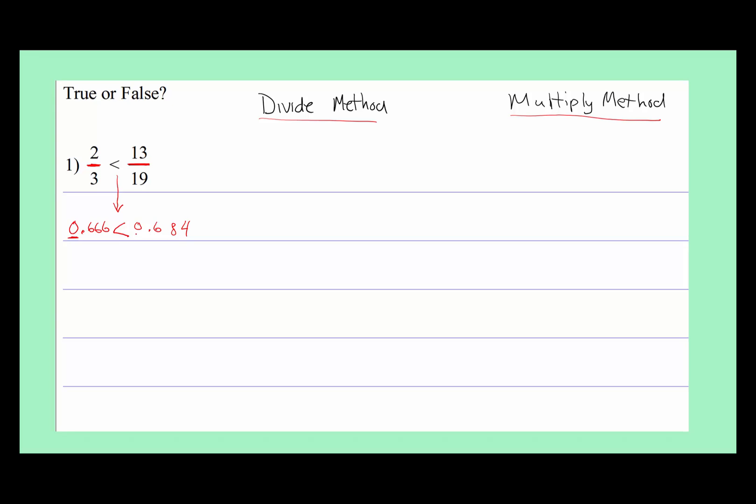Well, they both have the zero in the ones column, the same. They both have the six in the tenths column, the same. So now we're at the hundredths column. We have an eight and we have a six. So, this side is larger, because eight is larger, and this side is smaller. So, two-thirds is less than 13-nineteenths. That's true.